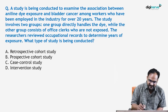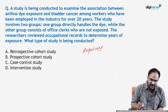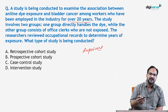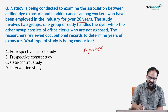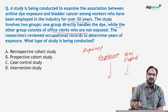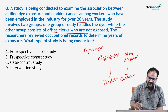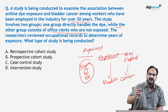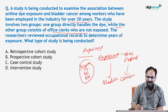Next question: A study examines the association between aniline dye exposure and bladder cancer among workers employed in an industry for 20 years. The study involves two groups: one group directly handles the dye (the exposed group) and the other consists of office clerks who are not exposed (the non-exposed group). Researchers review occupational records to determine years of exposure, and then assess these subjects for bladder cancer, establishing a definite exposure to examine the outcome.